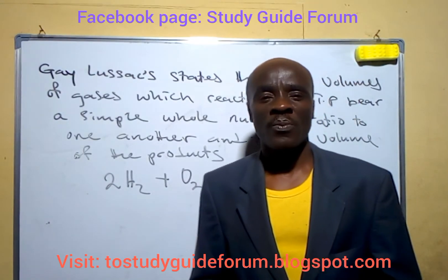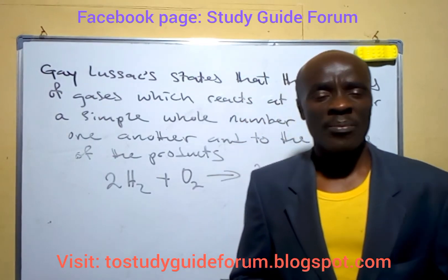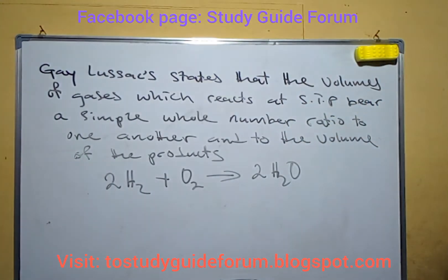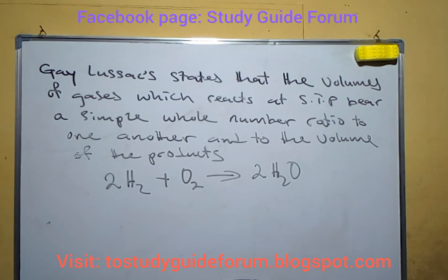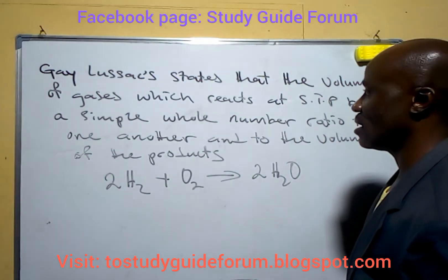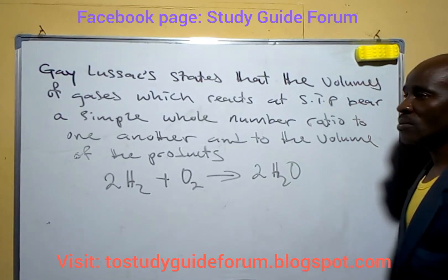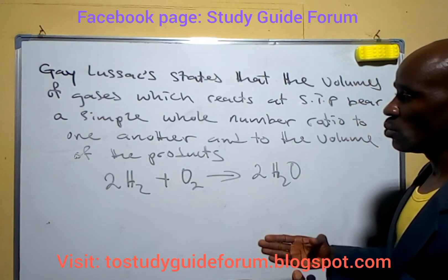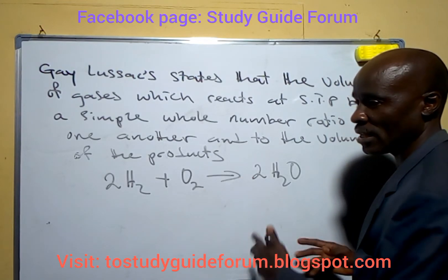Today let's quickly look at what Gay-Lussac's Law states, and then try to do some calculations based on the law. What we have here on the board is that this law states that the volume of gases which react at STP are in a simple whole number ratio to one another and to the volume of the products. What this means is that when gases combine at STP, they do so in a simple ratio with each other.